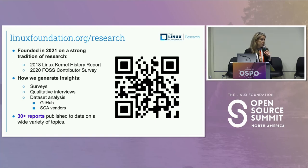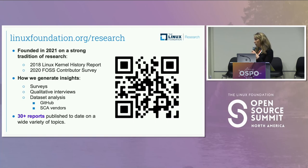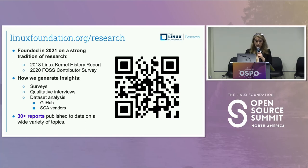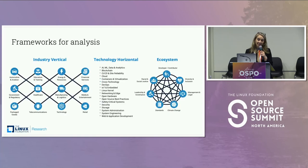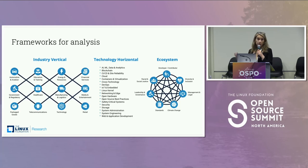We generate insights through survey work, qualitative interviews, and analyzing datasets from SCA vendors, GitHub repositories, or SCA vendor data, and produce research deliverables that describe what those trends and gaps are. To date, we have more than 30 unique reports published. It's been a very busy two years and a rewarding effort to be a part of because it is so value additive.